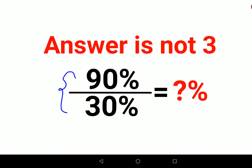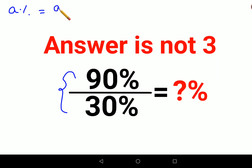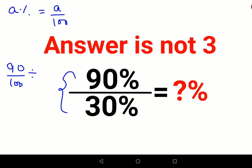When you have a percent sign ahead of any number, that can be converted into a fraction by dividing that number by 100. So we will write this as 90 upon 100, and this division becomes 30 upon 100.